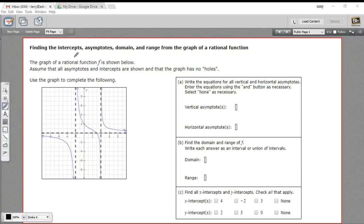In this problem, we're being asked to find intercepts, asymptotes, domain and range from the graph of what's called a rational function.